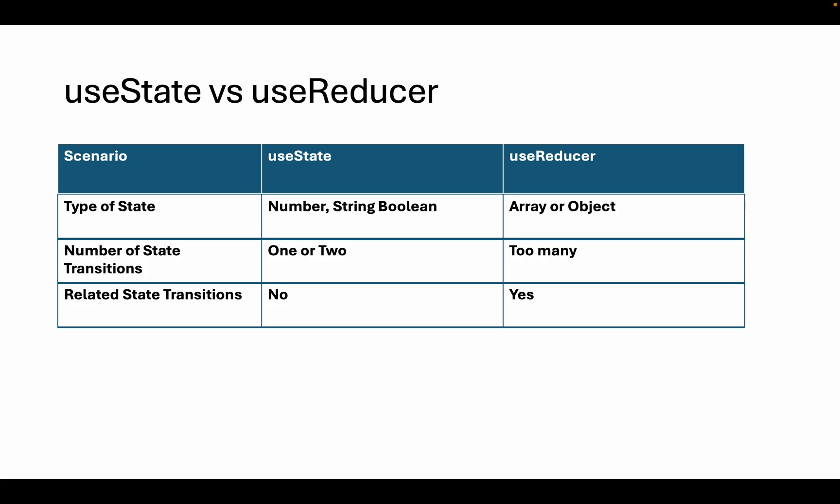Your code will be more clean and more readable, and you will not forget any transition, as the related transitions will be in the same place inside the reducer function in the useReducer hook. That's why it's better to go with useReducer in case of related or many transitions.